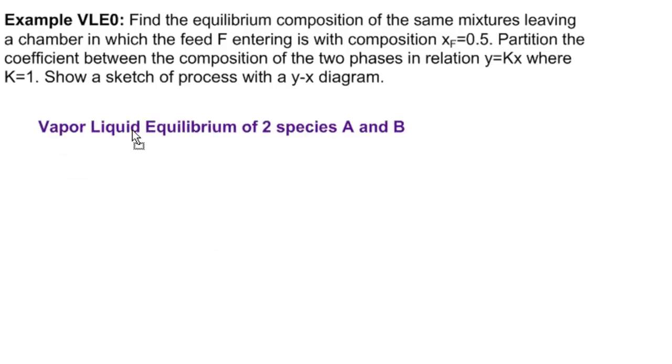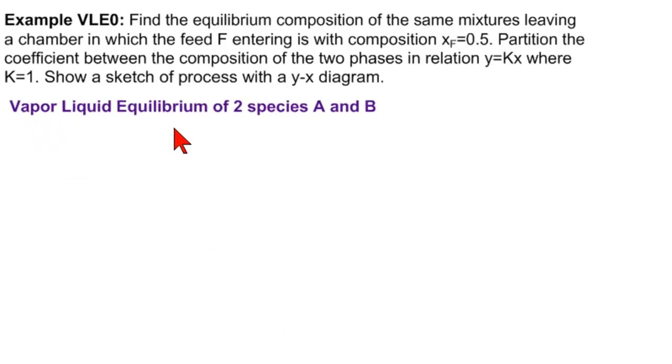The idea is that you're looking for the vapor-liquid equilibrium of two species A and B. The vapor equilibrium, or X-Y diagram, is made with a square. Over here you have A, and over here you have B.